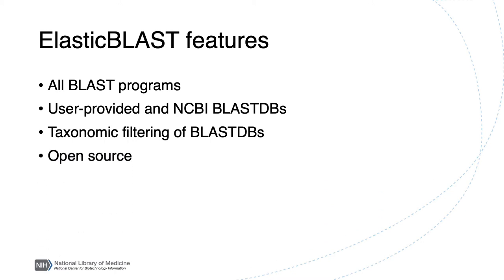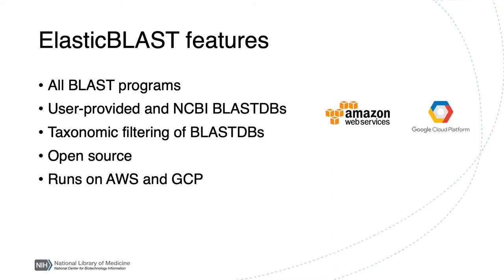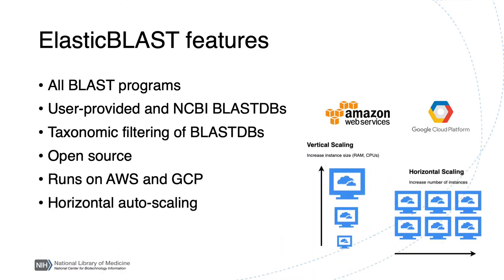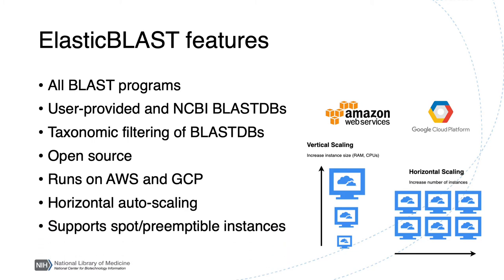Elastic Blast is open source software and runs on major cloud service providers. It supports horizontal autoscaling, which is the ability to adjust the number of compute instances automatically up to a predefined limit based on its workload. It's also worth mentioning that Elastic Blast supports spot or preemptable instances, which provide compute capacity at a discounted price.